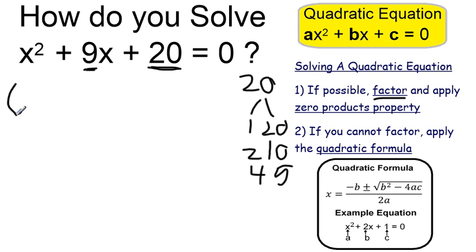Therefore, this trinomial can be factored, rewritten as a product of binomials, x plus 4 and x plus 5. And all of that is still equal to 0.